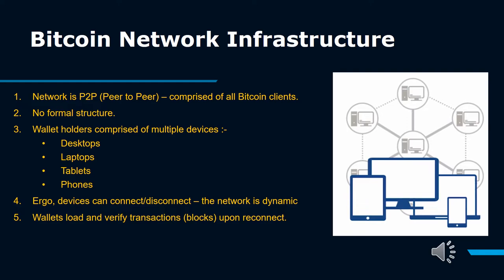The network nodes interconnect in a mesh network with a flat topology. There is no server, no centralized service, and no hierarchy within the network. Nodes in a peer-to-peer network both provide and consume services at the same time, with reciprocity acting as the incentive for participation. Peer-to-peer networks are inherently resilient, decentralized, and open. The preeminent example of a peer-to-peer network architecture was the early internet itself, where nodes on the IP network were equal.